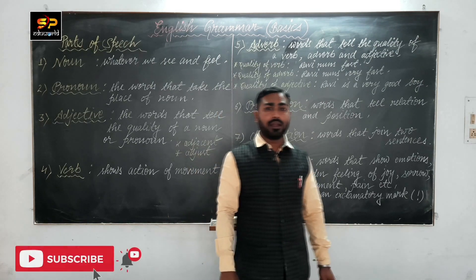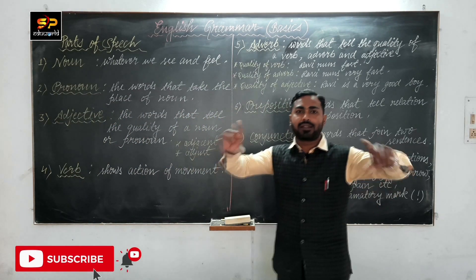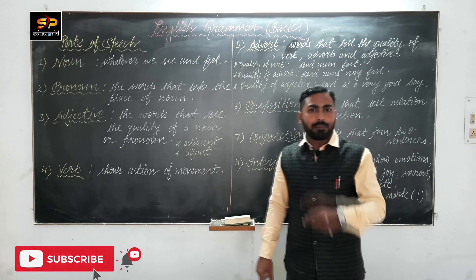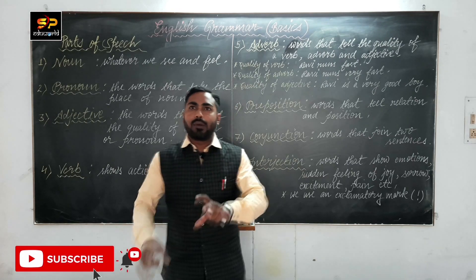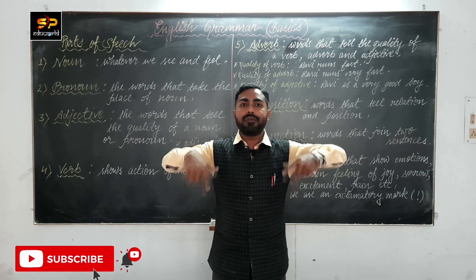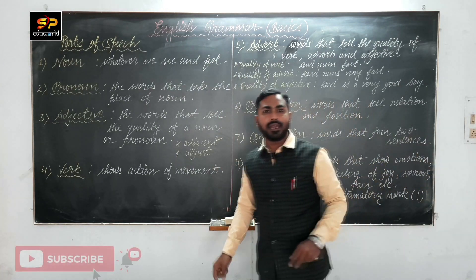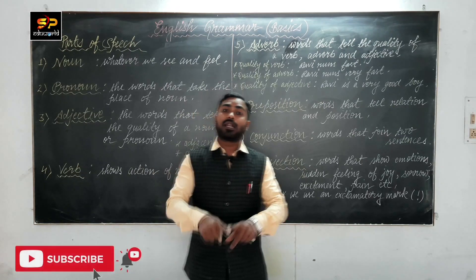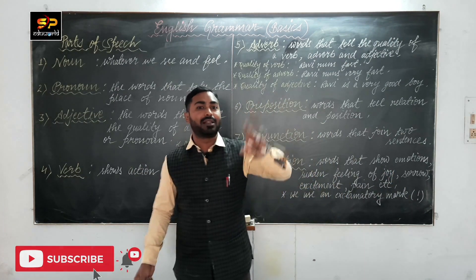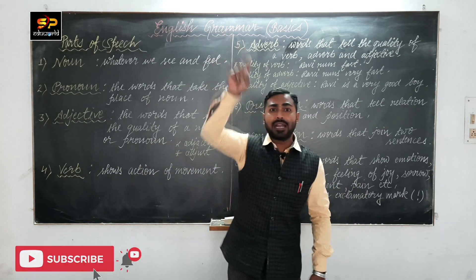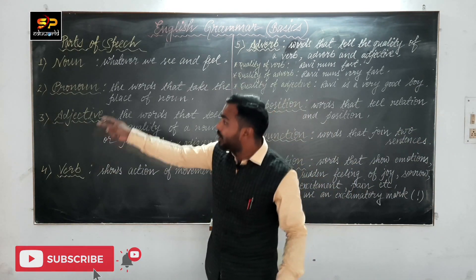Since childhood you may have memorized: 'Noun is the name of a person, place, or thing.' But to simply explain it to a child: whatever you see around you and whatever you can feel — all of that is noun. A table is noun, a fan is noun, a chair is noun, trees outside — all are noun. Whatever we see and feel, that is noun.